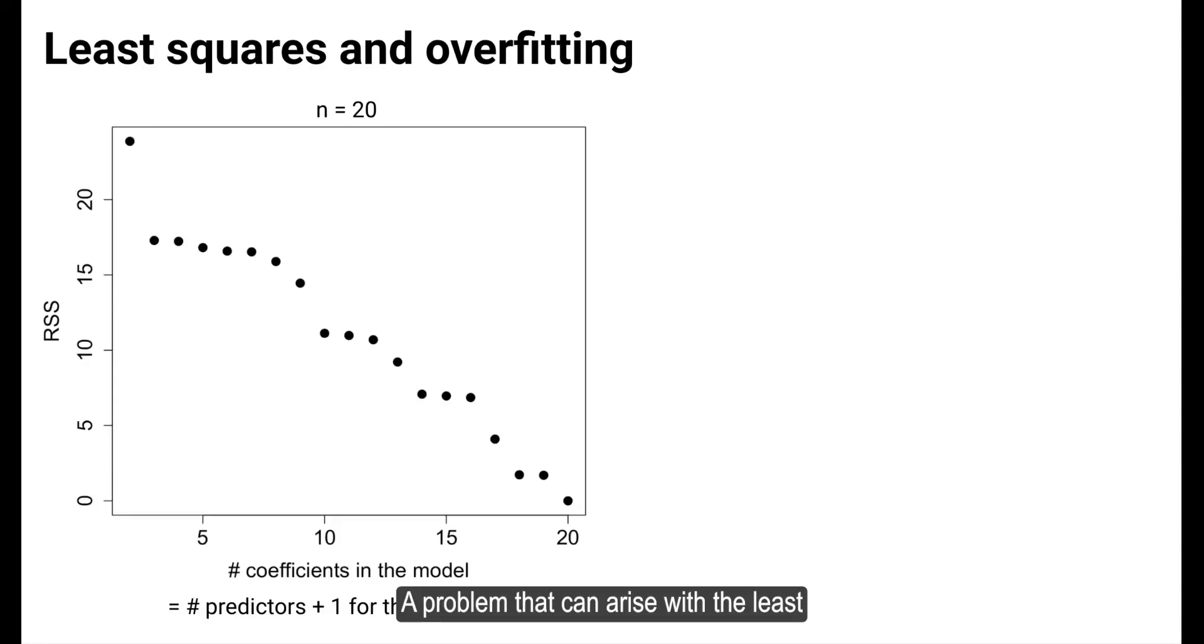A problem that can arise with the least squares approach is the potential for overfitting when the number of predictors increases.